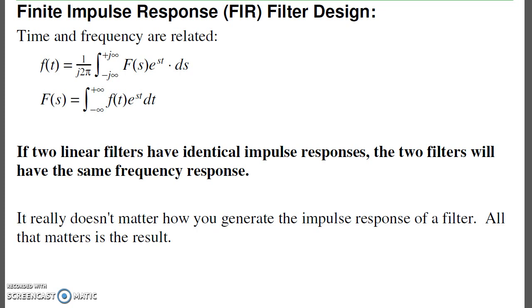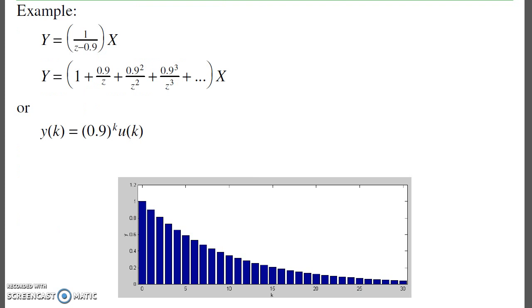What that means is that if two filters have identical impulse responses, the two filters have the same frequency response. And it really doesn't matter how you generate the impulse response of a filter. All that matters is the result. Well, one way to do that is called an FIR filter, finite impulse response filter.